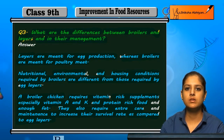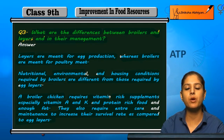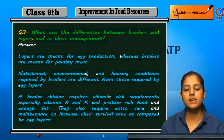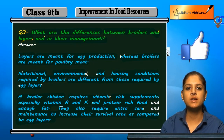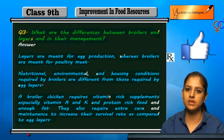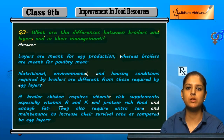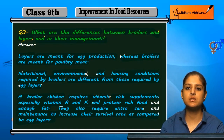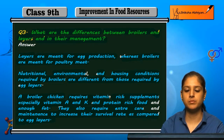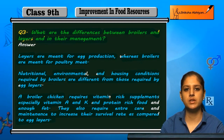Because broiler meat is in high demand, proper diet is very important for them. Egg-laying chickens don't need as much nutritional diet — they take a normal diet. Broilers are valued for their skin and meat, so they need more proteins, fats, and vitamins to keep them healthy. These are the differences between the management practices of broilers and layers.